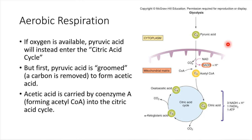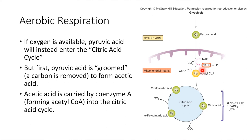One more time just to recap all of that: pyruvic acid comes into a mitochondria, a carbon is removed from it. That leaves us with a molecule that just has two carbons — that's called acetic acid. Acetic acid joins up with a carrier called coenzyme A, and together they form acetyl-CoA. Acetyl-CoA is a molecule to know — it is what can enter into the next pathway.